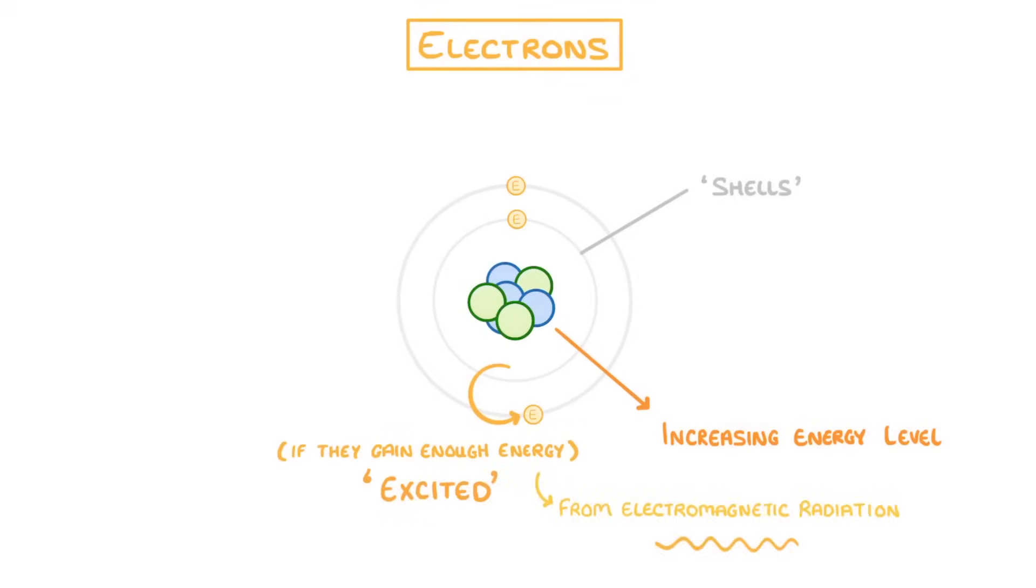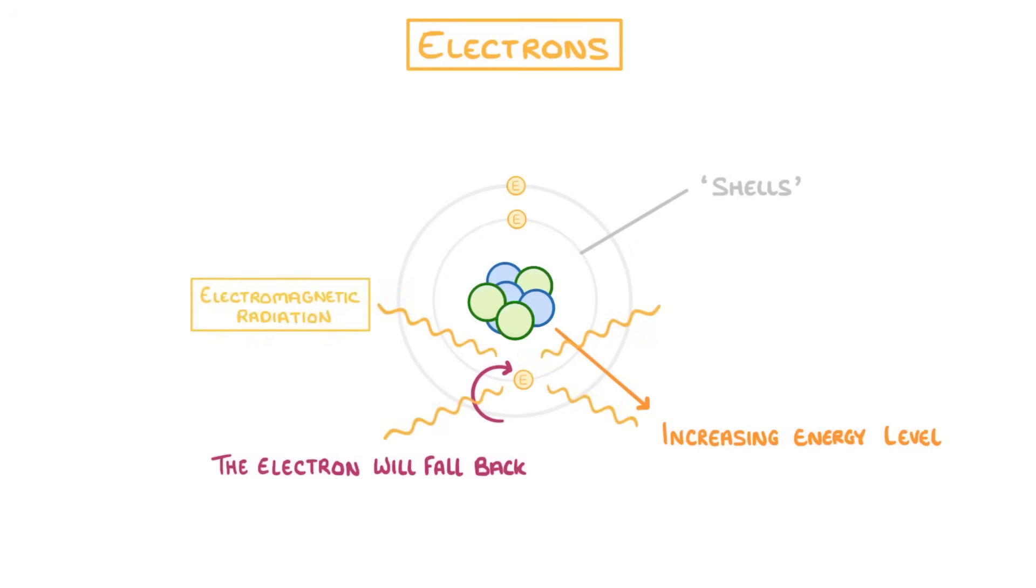The energy for this comes from electromagnetic radiation. And it will only work if the radiation carries just the right amount of energy to get the electron from one energy level to the next. Pretty soon afterwards though, the electron will fall back down to the lower energy level, and will re-emit the energy as electromagnetic radiation.